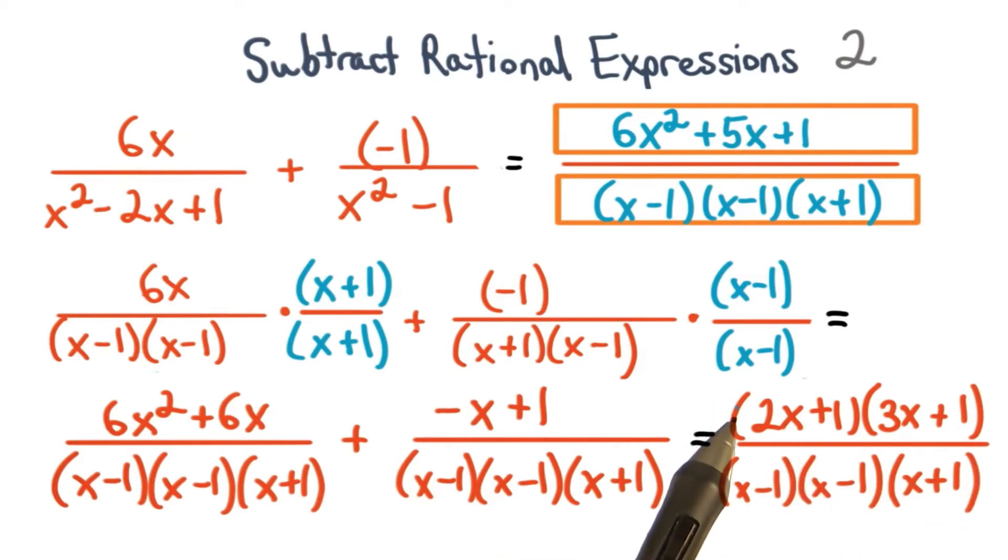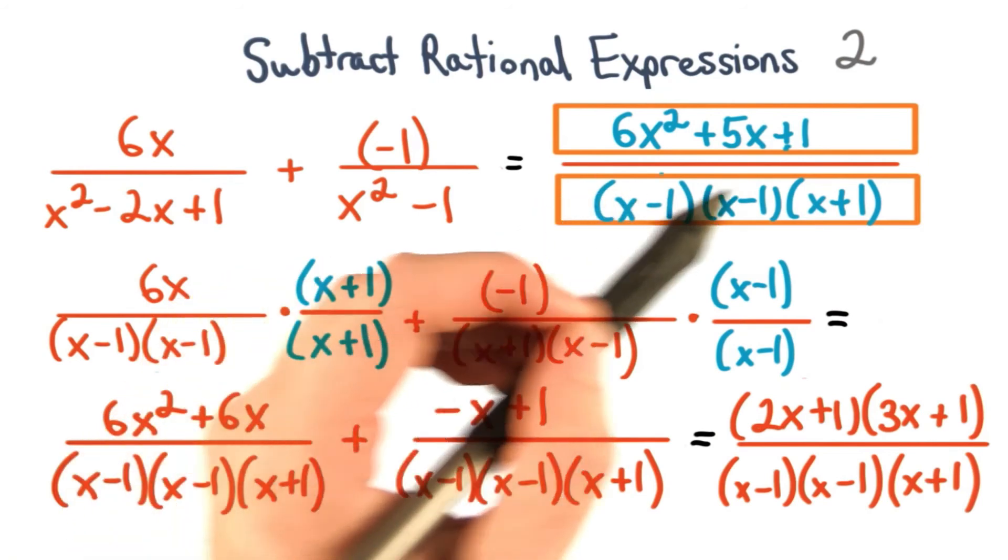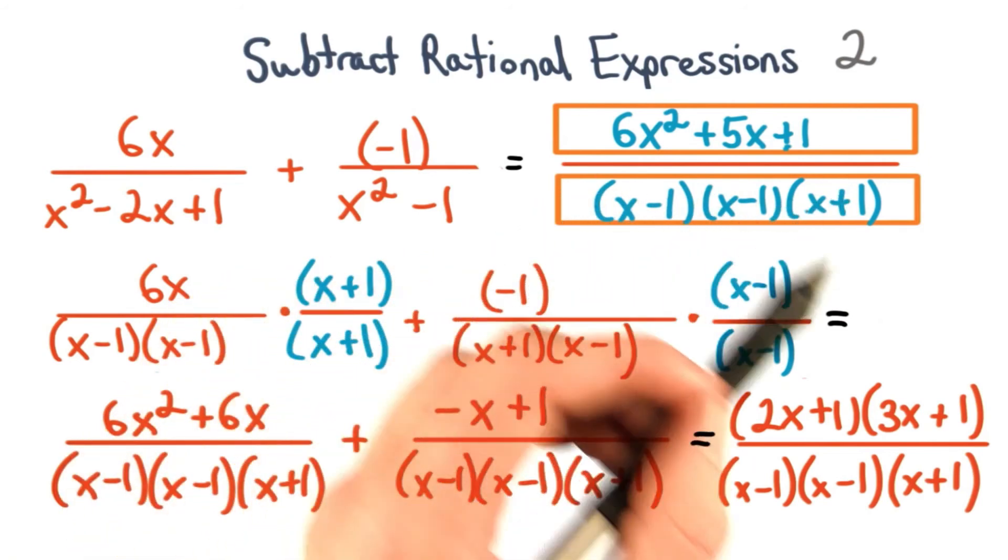But notice that this doesn't help us out. None of these factors appear in our denominator, so we can't simplify anymore. Our final answer would be 6x squared plus 5x plus 1 divided by the factors of this denominator.